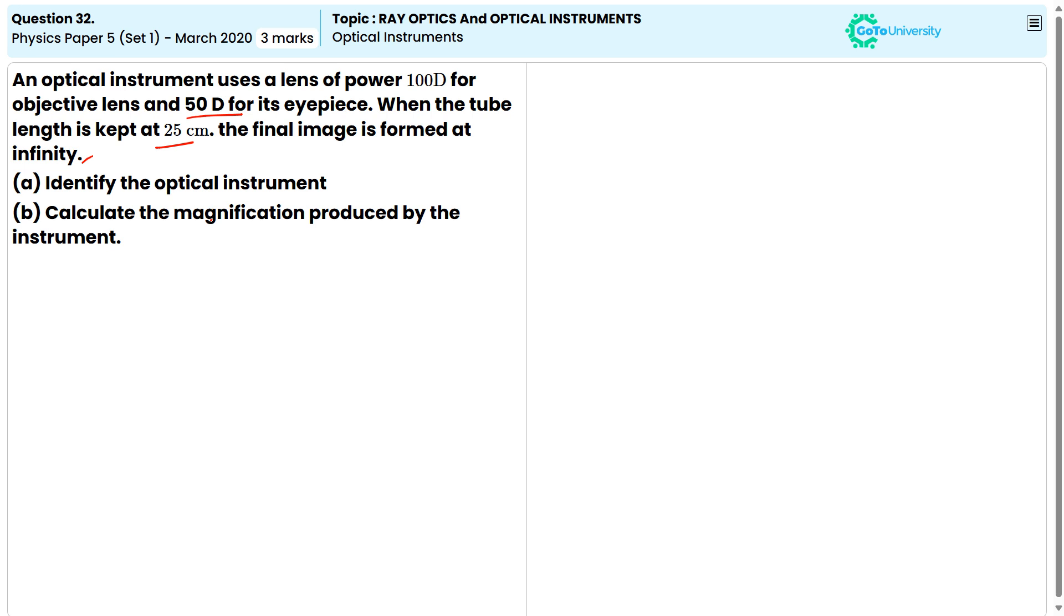Based on this given information, there are two questions. One is, identify the optical instrument. And the second one is, calculate the magnification produced by the instrument.